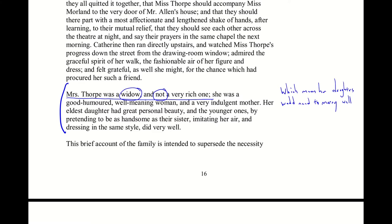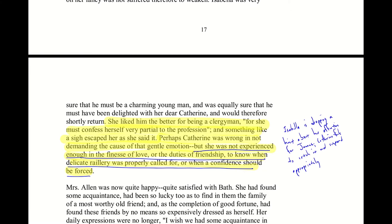Mrs. Thorpe is here to find husbands for her daughters. Isabella has already managed to attract what she thinks is a good potential husband — someone who will support her — who turns out to be Catherine's brother James. This is a context that Catherine needs to read in order to understand Isabella's behavior in the social circumstances of Bath. Unlike Catherine, Isabella is rather worldly and understands the mechanisms of social behavior, which makes her arch and artificial.